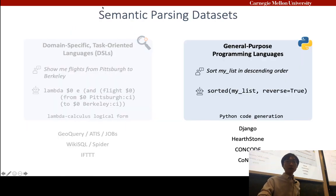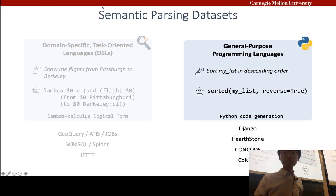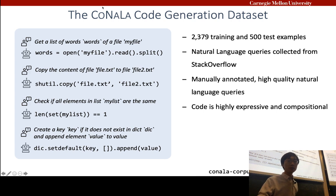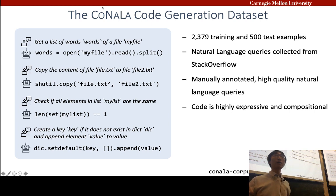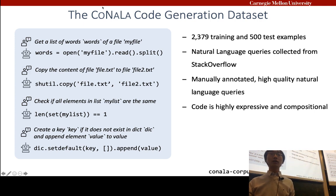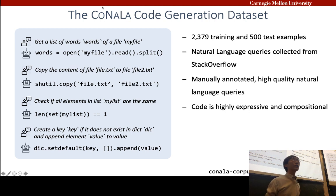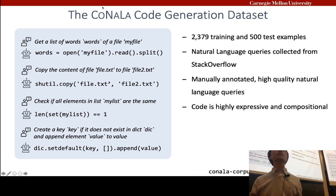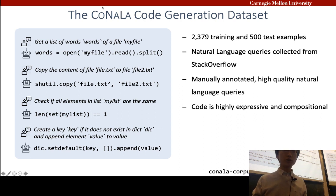For code generation, I'd like to introduce the CoNaLa dataset we built — a collection of a few thousand natural language questions from novice programmers learning Python, paired with target Python code snippets. Those questions are highly compositional and the target code can be rather complex. Even the best-performing systems register less than 10% exact match accuracy, making it a very challenging dataset worth working on.